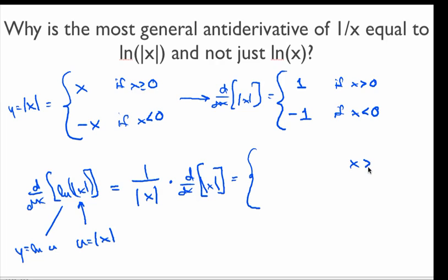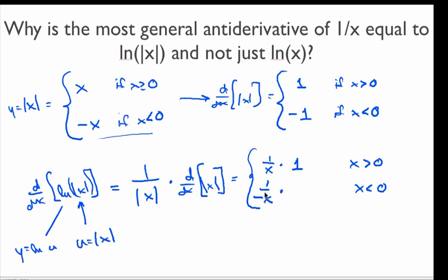We can make this simpler by looking at the definition of absolute value and its derivative. If x is positive, then this term is just 1 over x, and the derivative of absolute value of x is just 1. So we get 1 over x. If x is negative, then this term is 1 over negative x — since the absolute value of a negative x is minus x — and the derivative of that is minus 1.